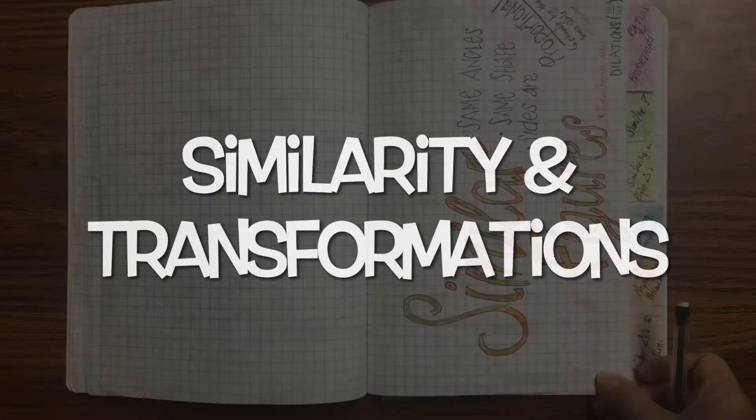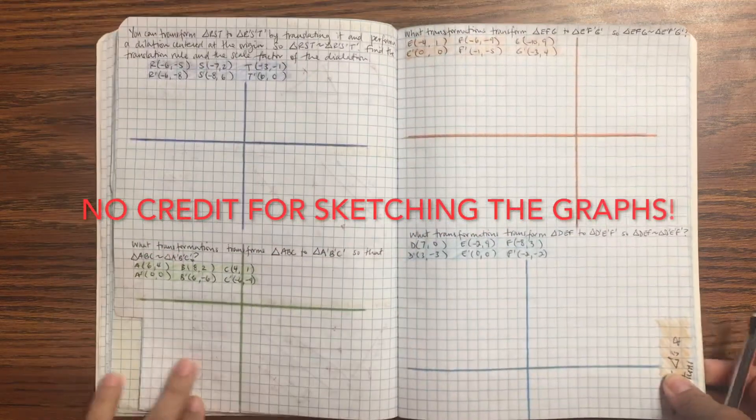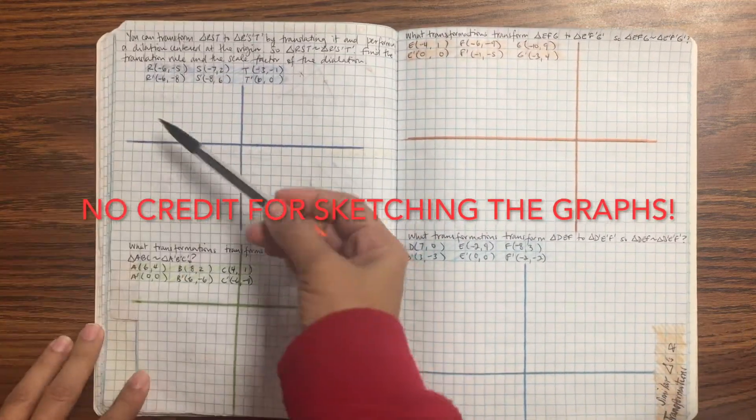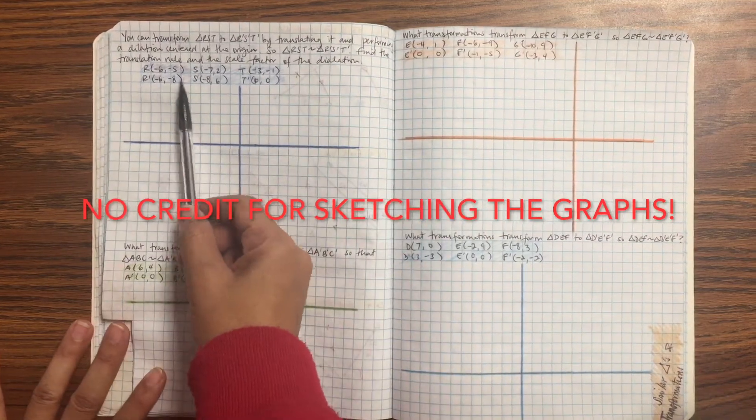Let's take a look at similarity and transformations, and that's really just putting things together. It's nothing new. So make a tab, Similar Triangles and Transformations. You don't get any credit if you sketch. It must be exact, so you need to draw out a graph.